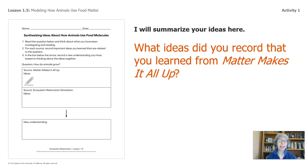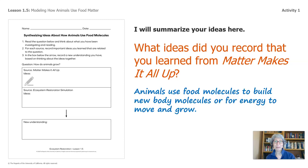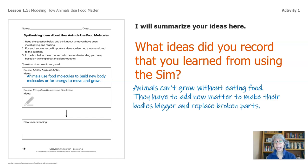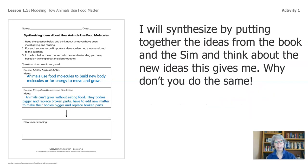I'll summarize your ideas here. What did you record from Matter Makes It All Up? Animals use food molecules to build new body molecules or for energy to move and grow. Jot that down. What about the sim? Did you go back and look at the sim, or do you already have some ideas written from when you last saw the ecosystem simulation? Animals can't grow without eating food — they have to add new matter to make their bodies bigger and replace broken parts.